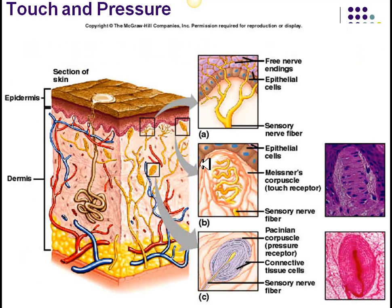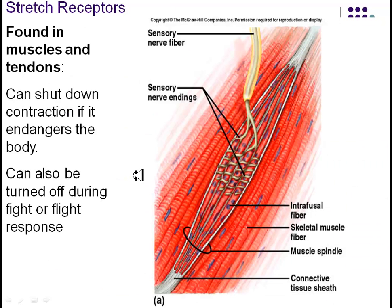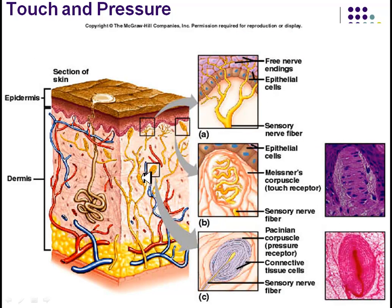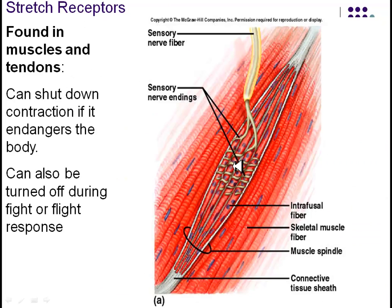Looking at the skin, you can see free nerve endings, touch receptors, Meissner's corpuscles, and pressure receptors. These are all mechanical — when you press down on the skin lightly, you press on the touch receptor and that's what causes the nerve to fire, so they're sensitive to mechanical pressure. The same applies to the deeper pressure receptors in the dermis. Stretch receptors in the muscle fire when the muscle stretches or expands to a certain point, sending information to the spinal cord and ultimately to the brain as feedback about that muscle.